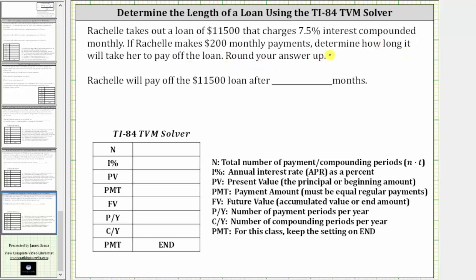We will answer this question using the TI-84 TVM solver. Let's begin by determining the required information. N is the total number of payment periods, which in this case is what we are solving for, so we'll come back to N. I percent is the annual interest rate.